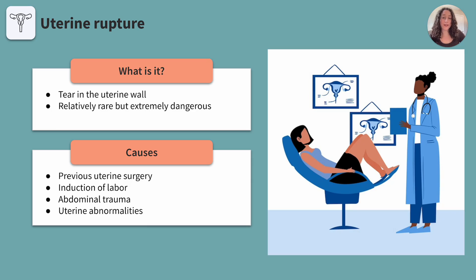Uterine rupture can have various causes, but it typically occurs during labor, especially in clients with previous uterine surgery, such as a cesarean section. Other causes include induction of labor, abdominal trauma, and uterine abnormalities.